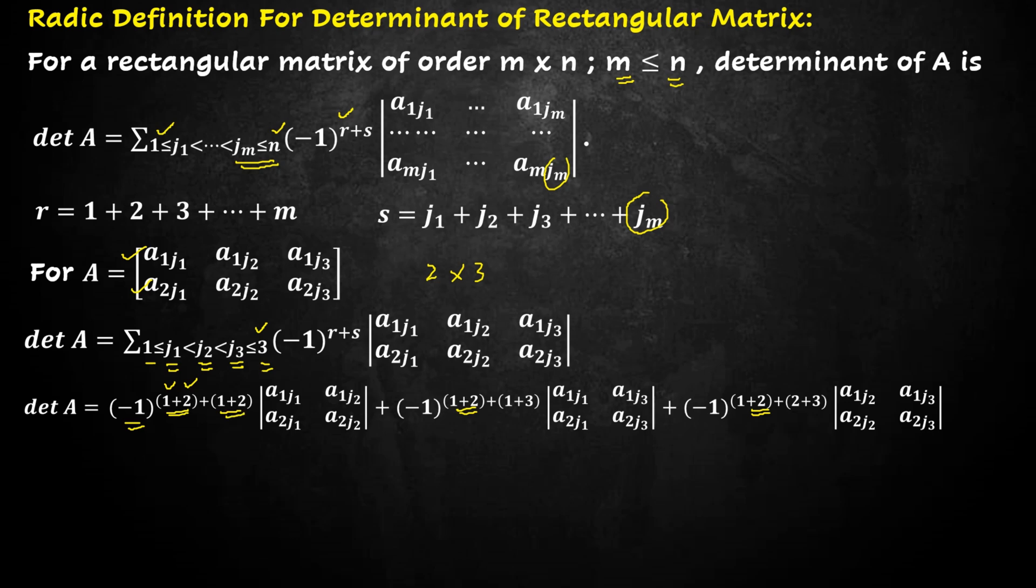Plus number of columns. First, we take first and second column, first and second column and write the determinant.